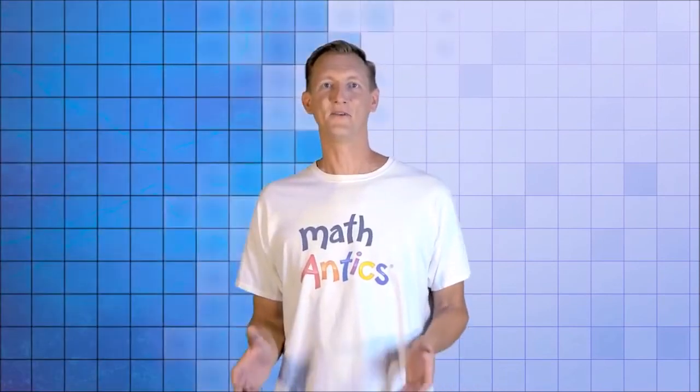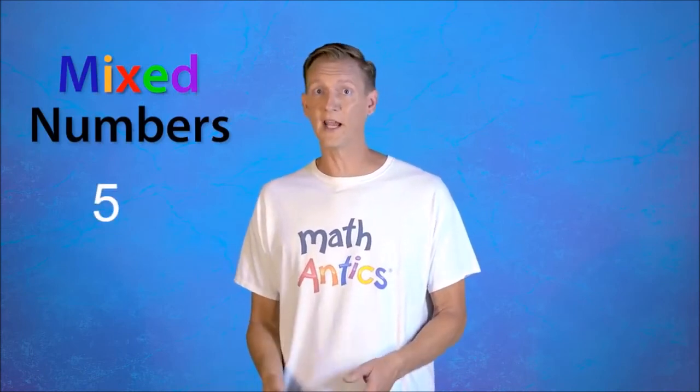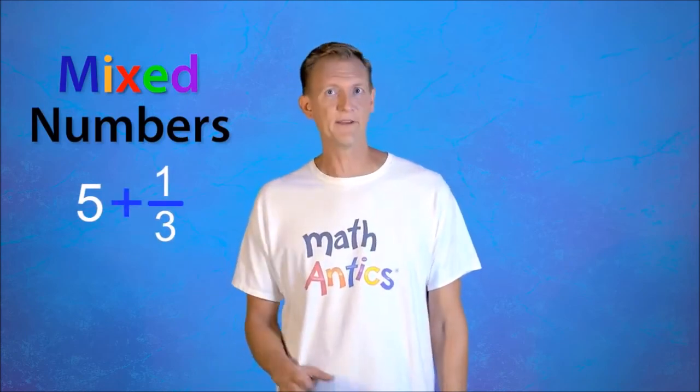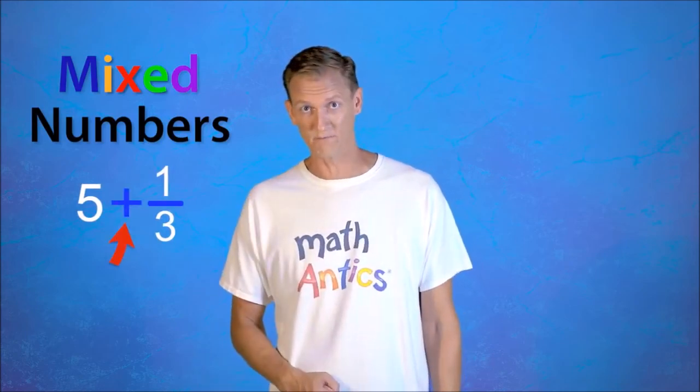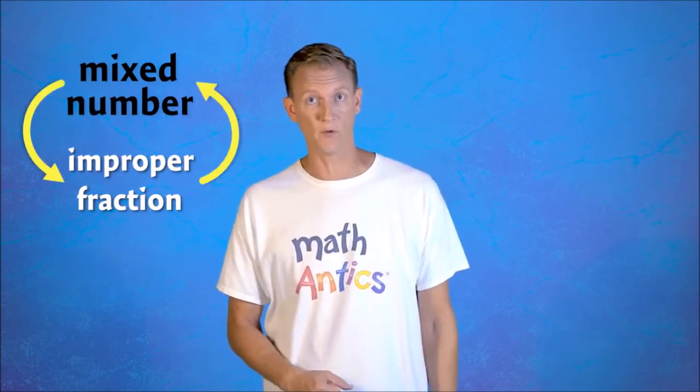Alright, so now you know what mixed numbers are. They're a combination of a whole number and a proper fraction. And you know that those two parts are actually being added together, even though the plus sign is usually not shown. You also know that a mixed number is basically a simplified form of an improper fraction, and that you can use the procedures we learned to convert back and forth between the two forms.